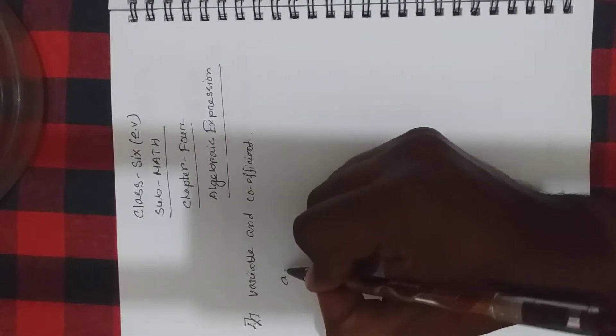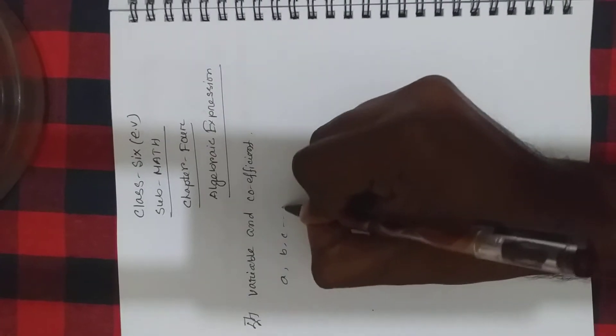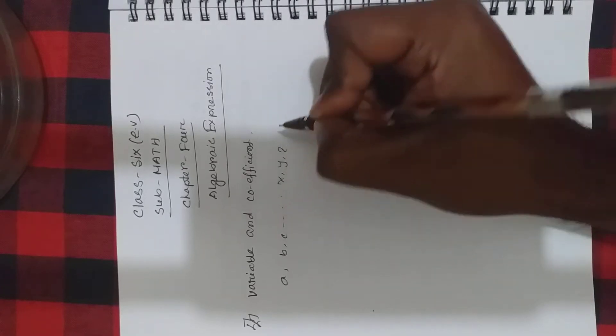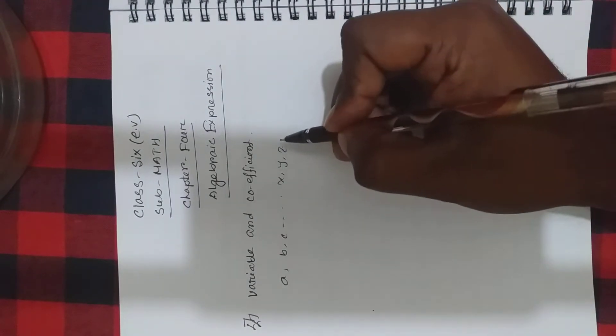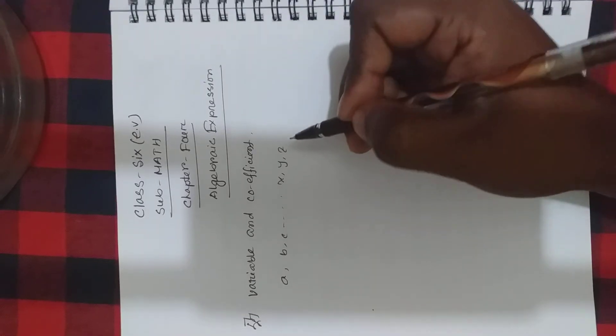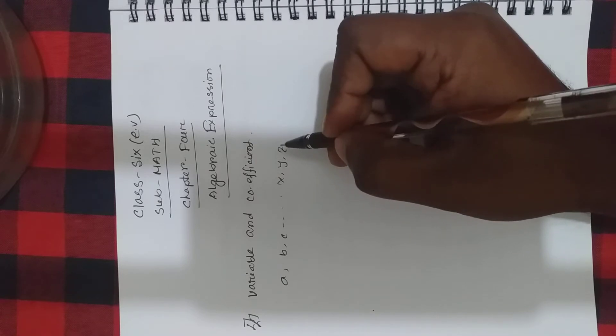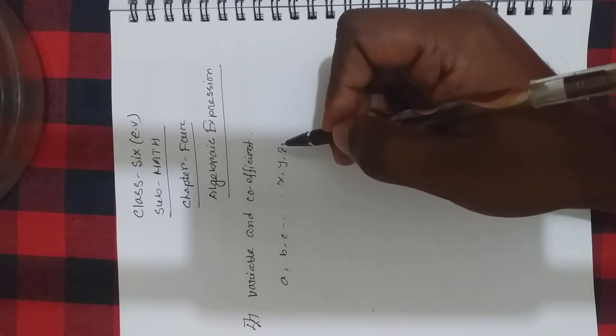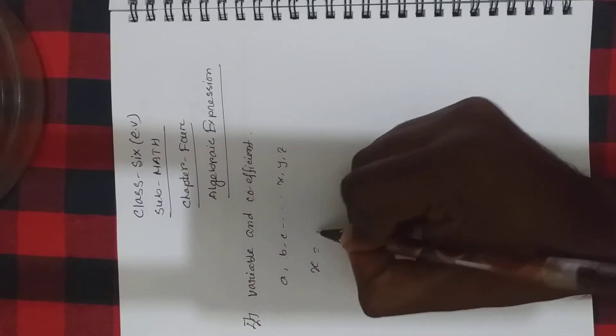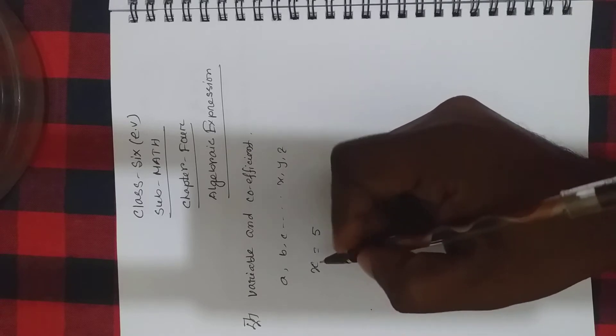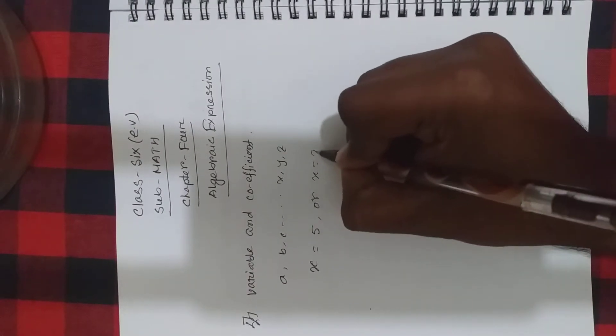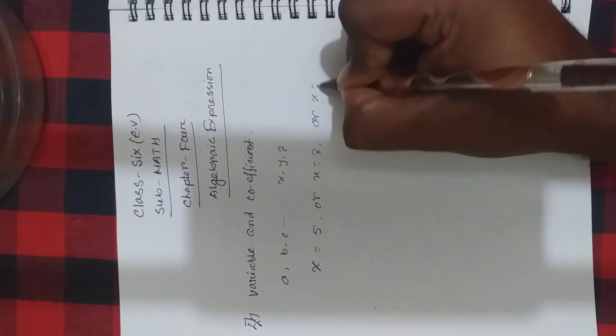Alphabetic letters A, B, C, X, Y, Z are used to express known or unknown numbers or expressions in algebra. As you can see, in algebra, English alphabet letters A, B, C... X, Y, Z are used to express known or unknown numbers. Such like X equal 5, or X equal 7, or X equal 10.